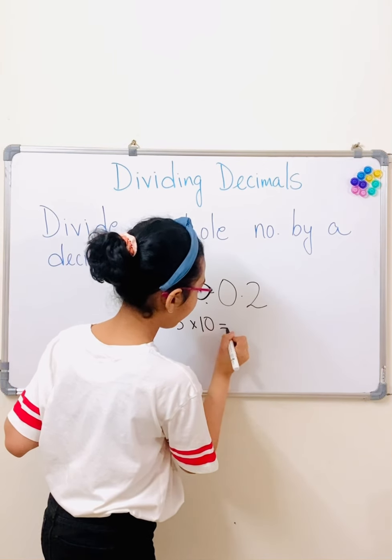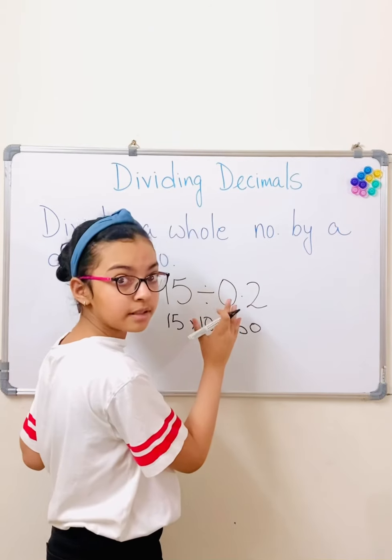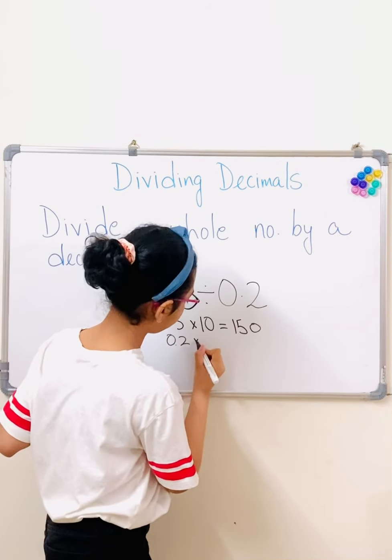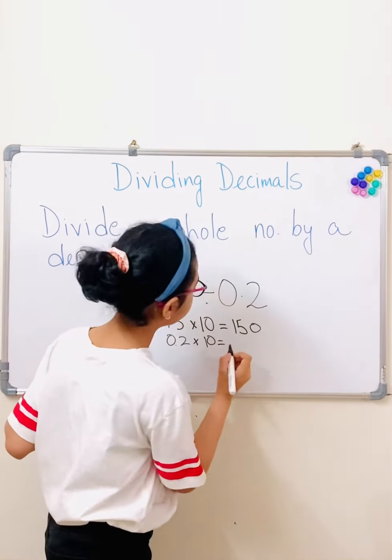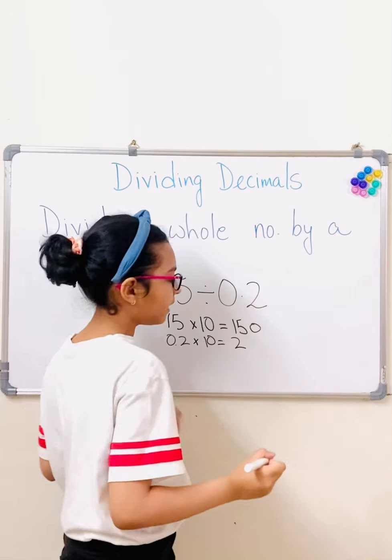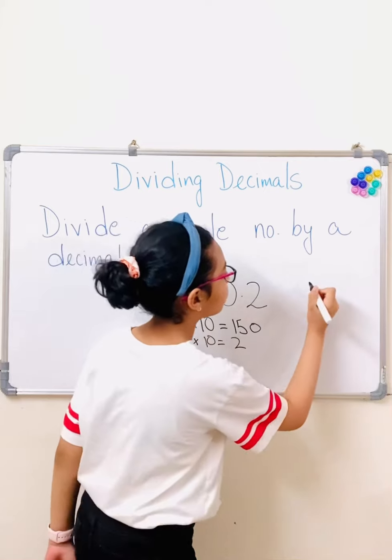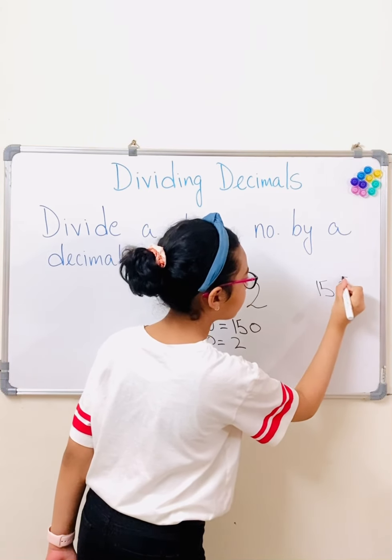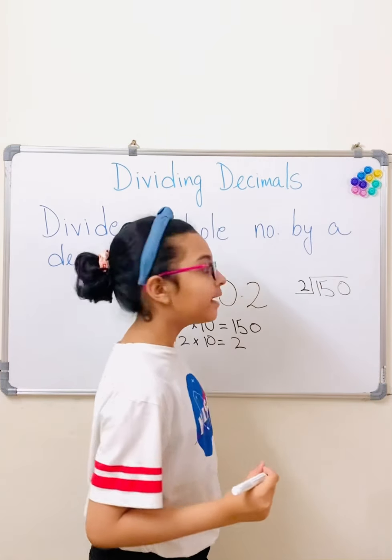And that equals 250. And now let's do 0.2. So 0.2 multiplied by 10 equals 2. So now we're supposed to divide these two numbers here. So we'll do that here. 150 divided by 2. So let's begin.